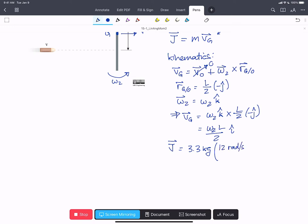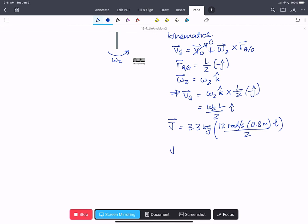12 radians per second times 0.8 meters divided by 2 in the I hat direction, and our linear momentum is 15.84 kilograms meters per second in the I hat.